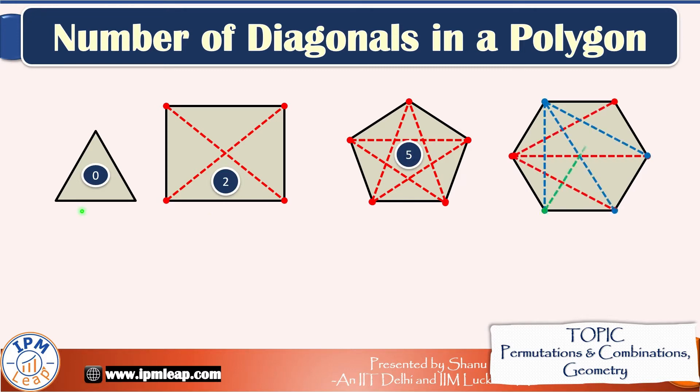For example, a polygon with 3 sides is called a triangle. A polygon with 4 sides is called a quadrilateral. A polygon with 5 sides is called a pentagon. A polygon with 6 sides is called a hexagon and so on.